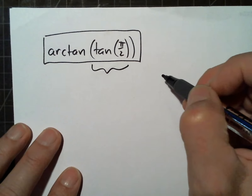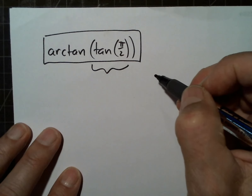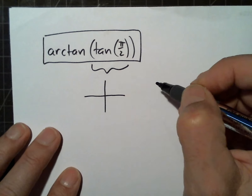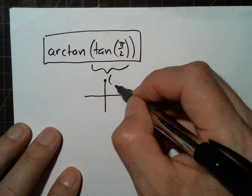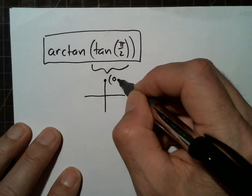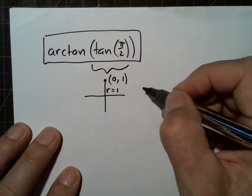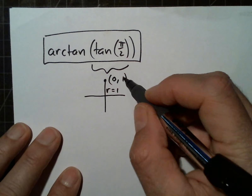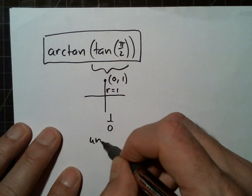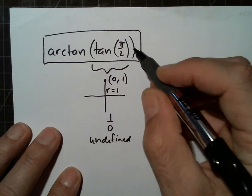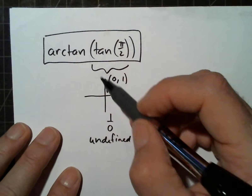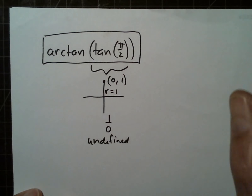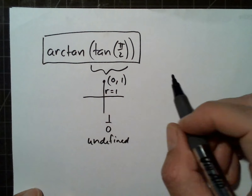Let's evaluate arctangent of tangent of π/2. π/2 is at the point with x = 0, y = 1, radius = 1. Tangent is y over x, which is 1/0 — that's undefined. Since the inside is undefined, we can't do arctangent of it. We have to be careful not to just cancel and say the answer is π/2.